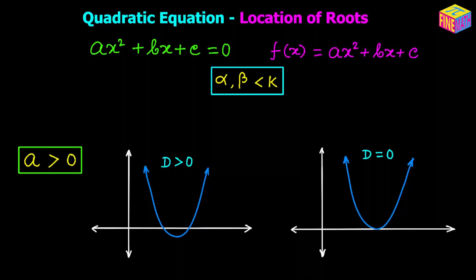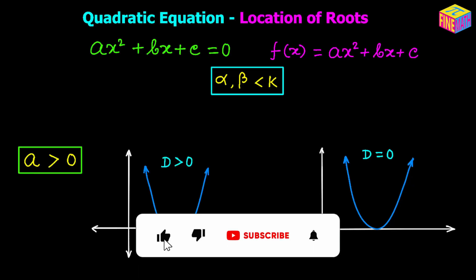Let's assume we have a quadratic equation ax² + bx + c = 0, and the quadratic function is f(x) = ax² + bx + c. Let's also assume the two roots of this equation are alpha and beta, and both alpha and beta are less than k — where k is that certain real number.